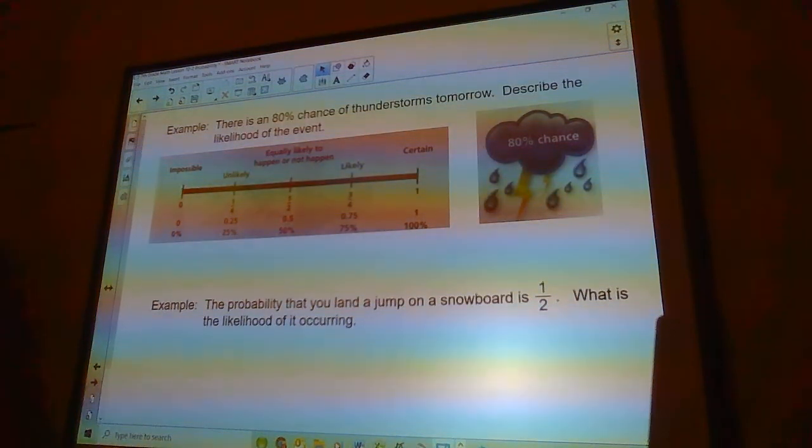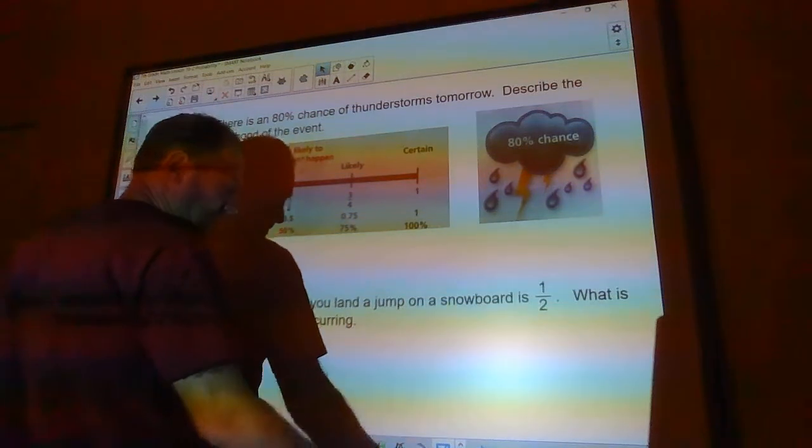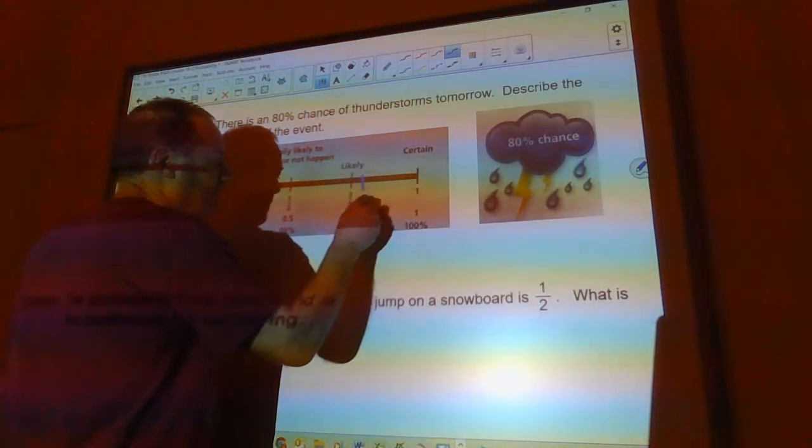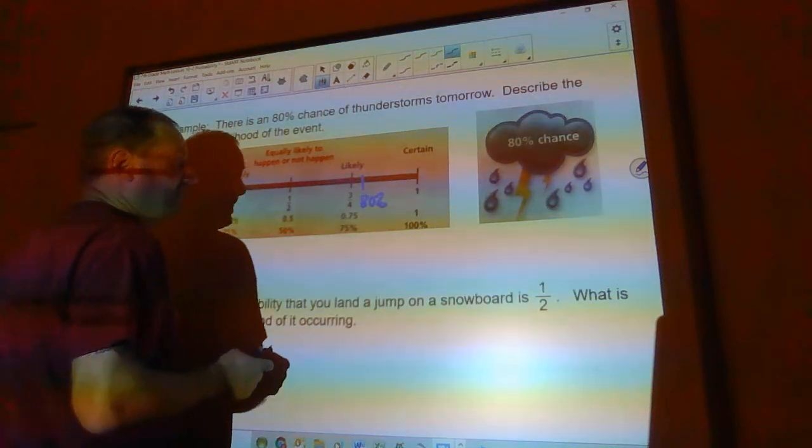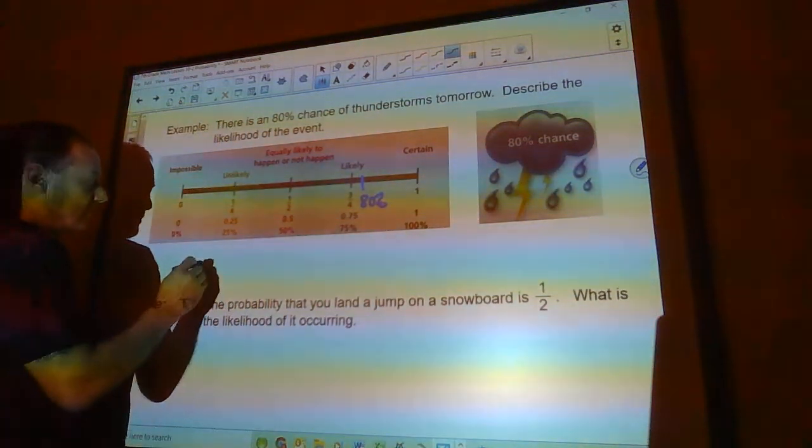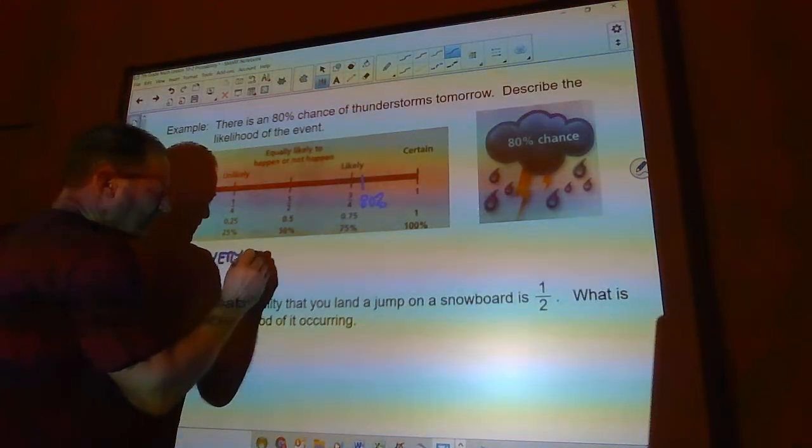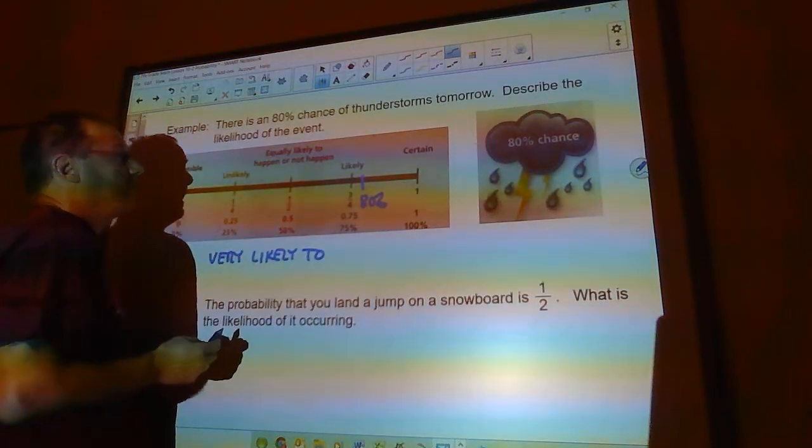There's an 80% chance of thunderstorms tomorrow. Describe the likelihood of the event. Well, an 80% chance is going to fall right about here, a little bit more than 75%. That's very likely. So we would say it's very likely to have a thunderstorm.